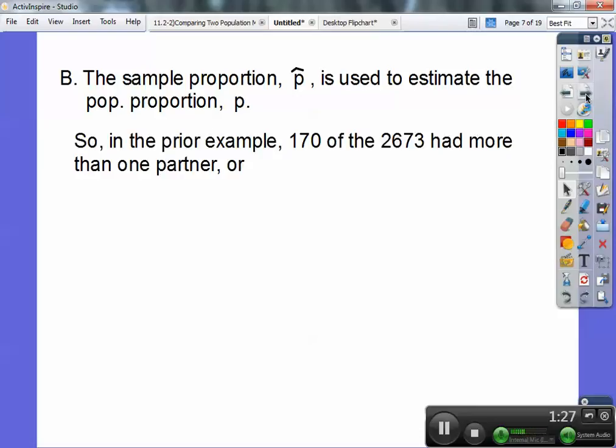So in the prior example, 170 of the 2,673 had more than one sexual partner, or your P-hat would have been that .0636.